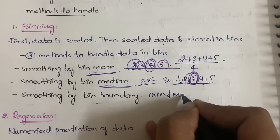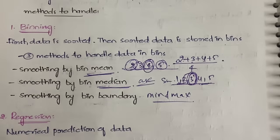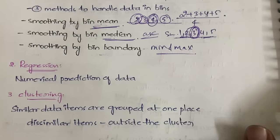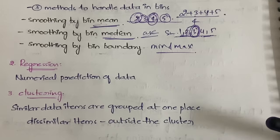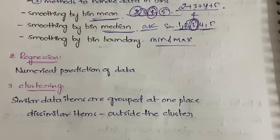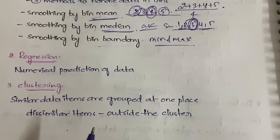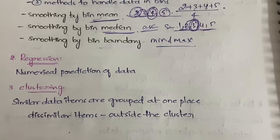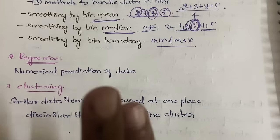That covers binning — sort the data, store into bins, then apply a smoothing method. Next is regression, which is numerical prediction of data — covered in detail in later videos. Then clustering: similar data items are grouped into one cluster, and dissimilar items are thrown out, making it easy to identify and remove error items. That completes data cleaning, which covers handling missing data and handling noisy data via binning, regression, and clustering.